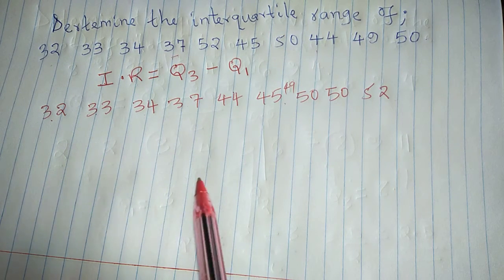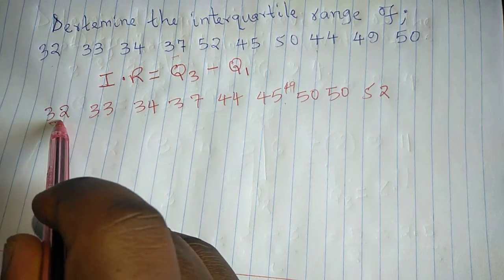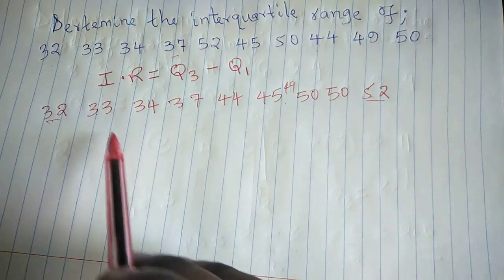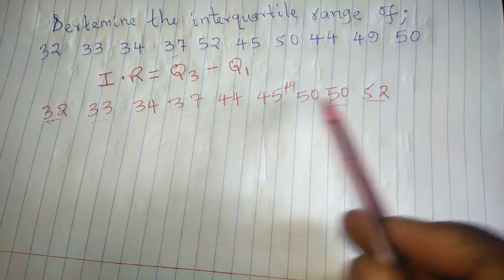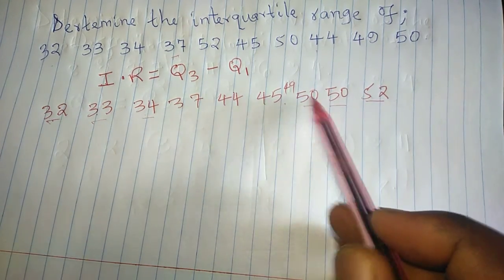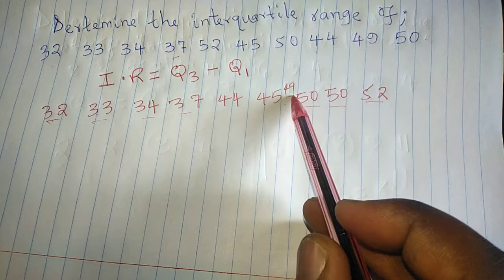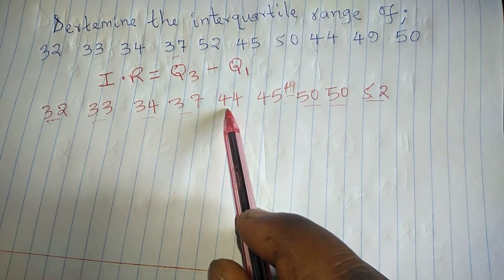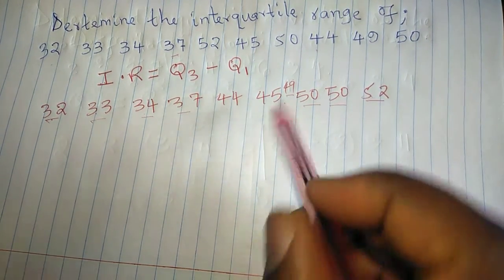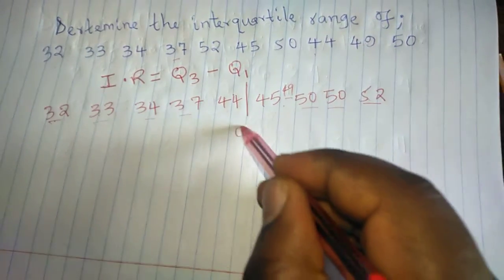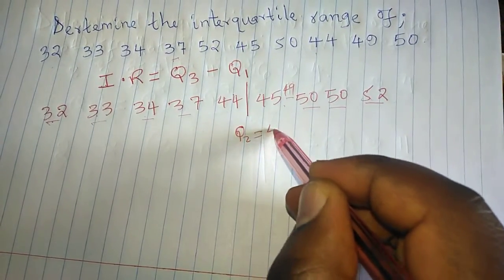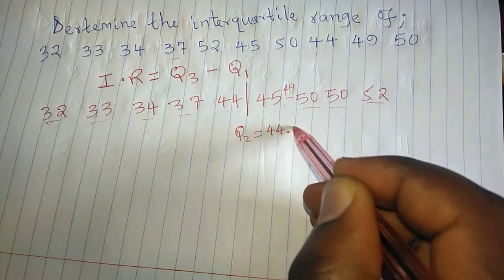So we can first of all identify Q2, which is the median. 1, 1, 2, 2, 3, 3, 3, 4, 4. Such that the median is a value between 44 and 45. And that median, which is called Q2, will be 44.5.